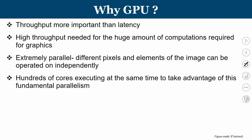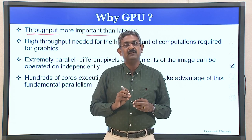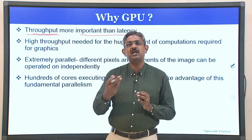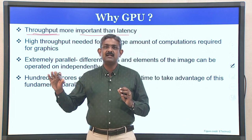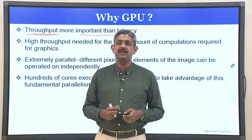Why are we talking about GPUs? We have certain applications where throughput — the number of pixels processed, the number of data values processed — is more important than latency. High throughput is needed for the huge amount of computations required for graphics. Different pixels and elements of the image can be operated on independently, so hundreds of cores are required. These cores need not be superscalar like those with branch prediction and super pipelining; they may be simple operations, but the volume of work is huge.